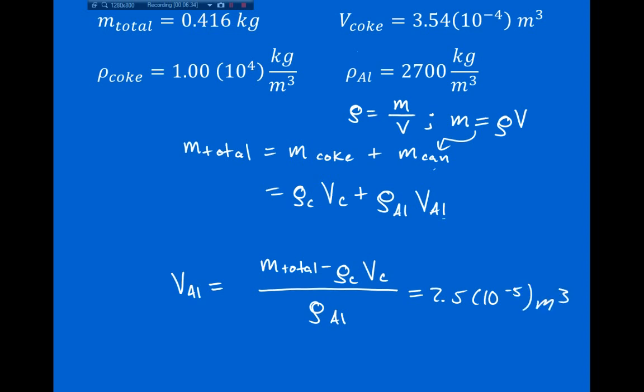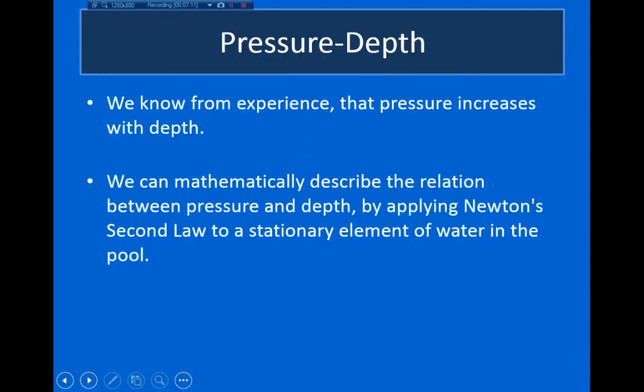One thing to note about cubic meters: a cubic meter is actually an enormous unit of volume. It's very common when calculating volumes in cubic meters to get relatively small numbers like 2.5×10⁻⁵. As mentioned earlier, one liter — which most people have a good feel for — is 10⁻³ cubic meters, meaning a cubic meter is a thousand times larger than a liter. At this point, I'd like to end this video.